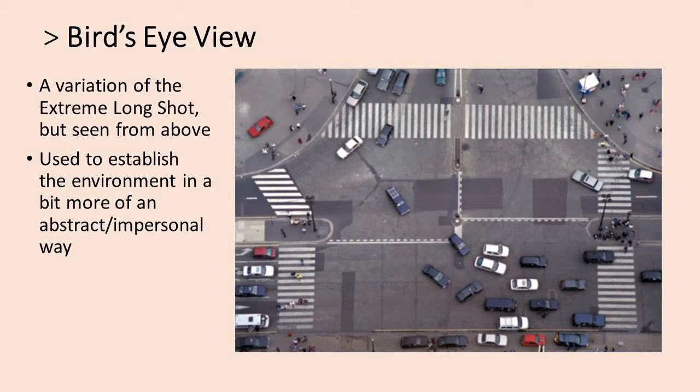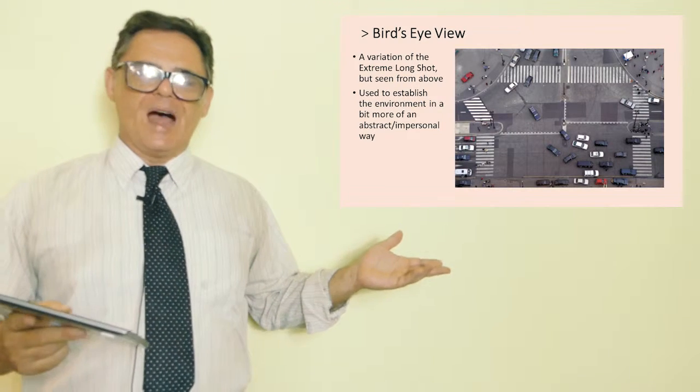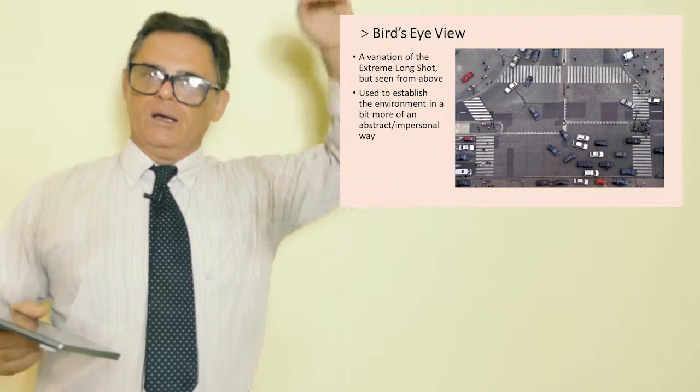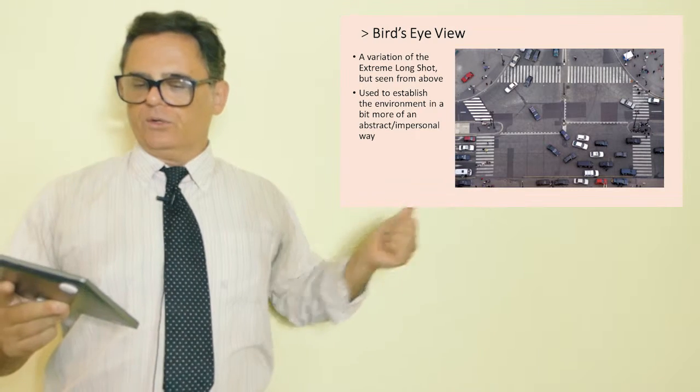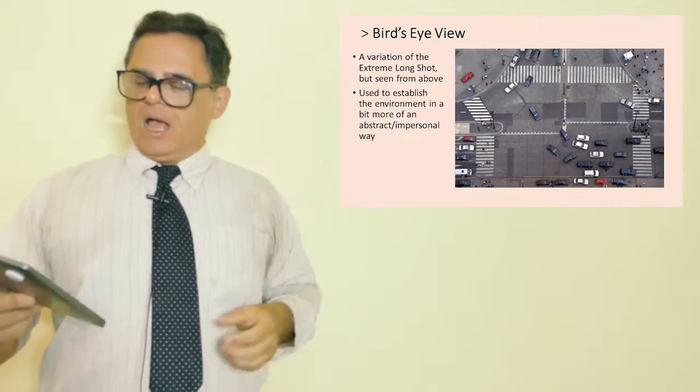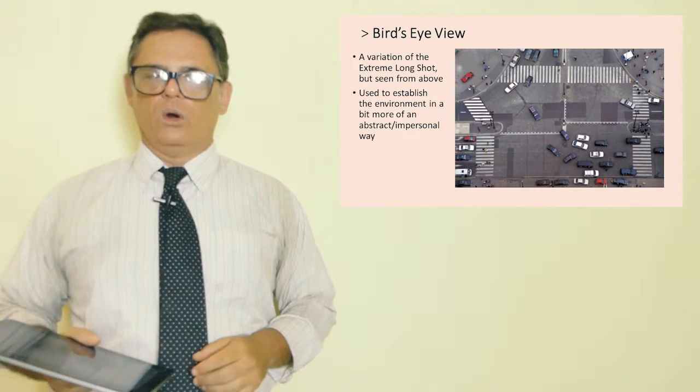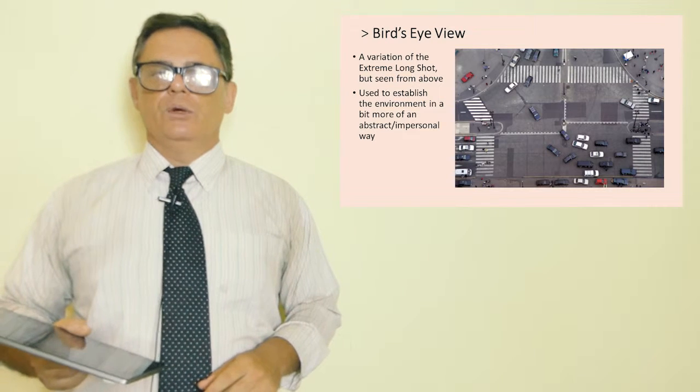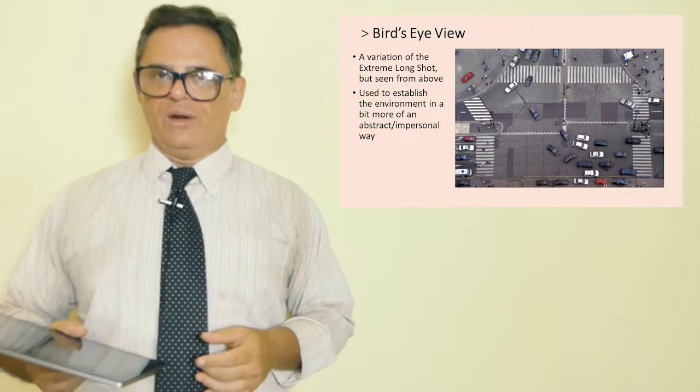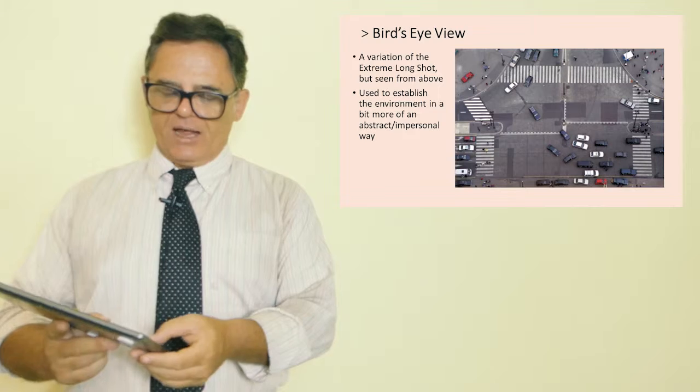Bird's eye view. This is a variation of the extreme long shot, at least in the example we see here. But it's seen from above, from a bird's eye perspective. The reason, this is also used to establish the environment, but it's done in a way so that it appears a little bit more abstract and impersonal. This is a perspective that we're not born with. It's a perspective we achieve through flight or by placement of a camera. Why would a director want to use, or a DP want to use the bird's eye perspective? Different reasons. Maybe they want to emphasize the smallness of the real world, or the strangeness of the real world, or to take the viewer to sort of jar the viewer out of a normal reality for a moment. So that's a choice. It's an aesthetic and stylistic choice.